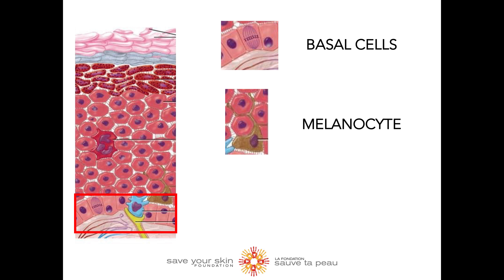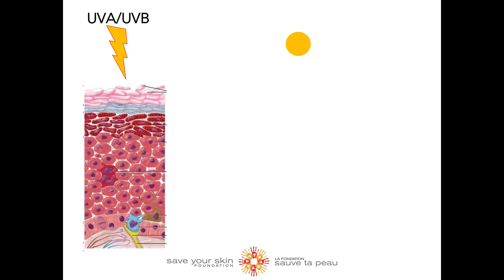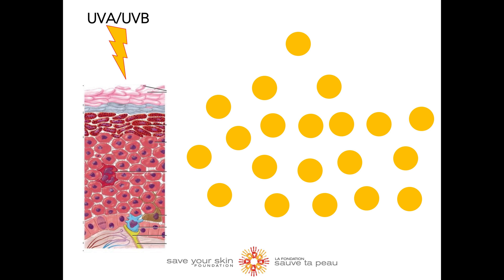The other cells I would like to address are the squamous cells that form the upper layer of the epidermis. So let's look into what happens to these cells in skin cancer. When we are exposed to UV radiation from the sun or tanning beds, our cells, which once divided normally, can no longer control themselves and begin to divide even if they don't receive any signal molecules.